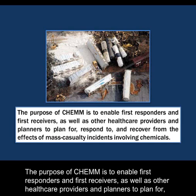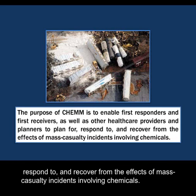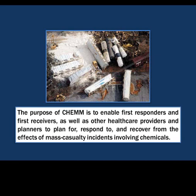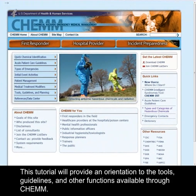The purpose of CHEM is to enable first responders and first receivers, as well as other healthcare providers and planners, to plan for, respond to, and recover from the effects of mass casualty incidents involving chemicals. This tutorial will provide an orientation to the tools, guidelines, and other functions available through CHEM.